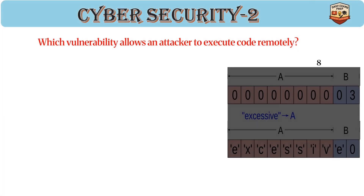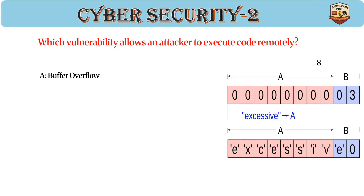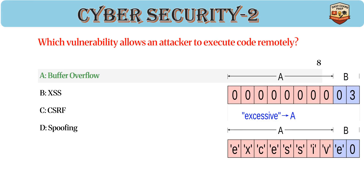Which vulnerability allows an attacker to execute code remotely? Answer: A. Buffer overflow. Buffer overflow occurs when memory is overwritten. Attackers can inject malicious code. Prevented by bounds checking and safe coding.